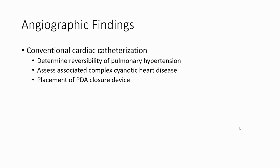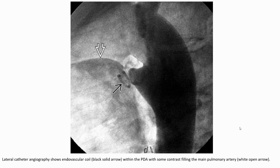Angiographic finding — conventional cardiac catheterization is used to determine reversibility of pulmonary hypertension, assess associated complex cyanotic heart disease, and for placement of PDA closure device. Lateral catheter angiography shows endovascular coil within the PDA with contrast filling the main pulmonary artery.